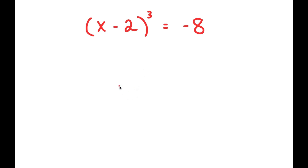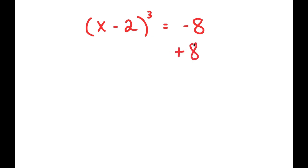In this problem, I have x minus 2 to the power of 3 is equal to negative 8. To solve this, I'm going to first start by adding 8 on both sides.